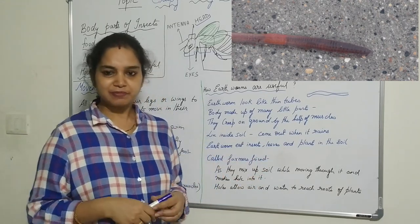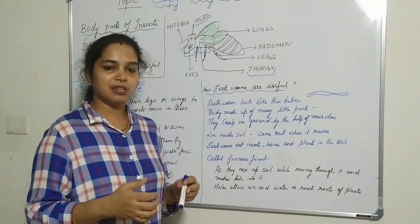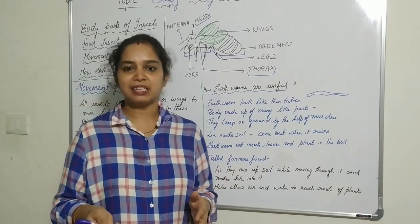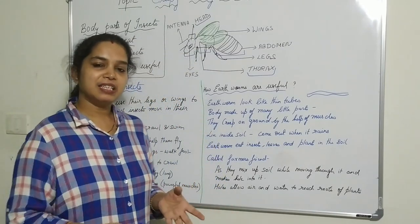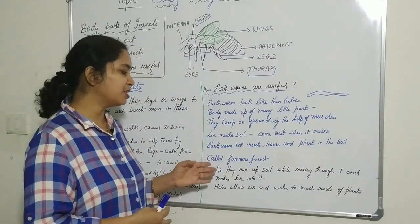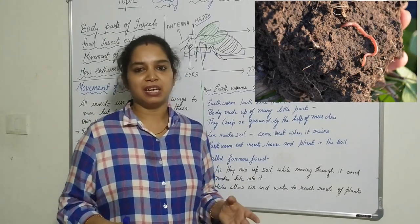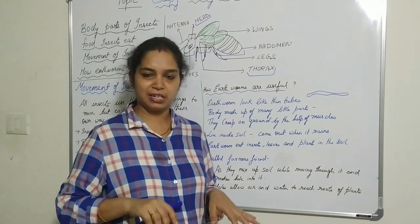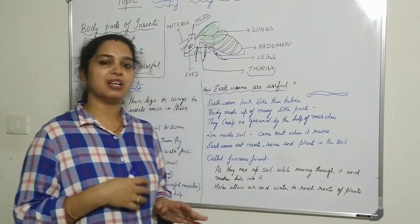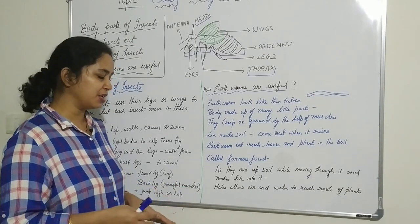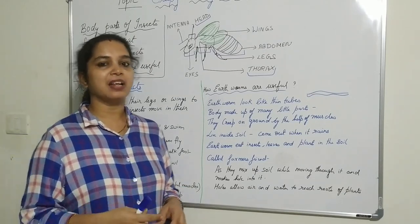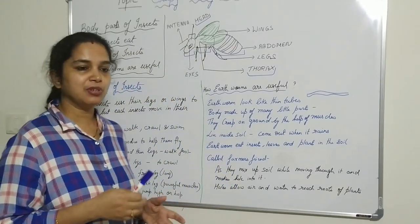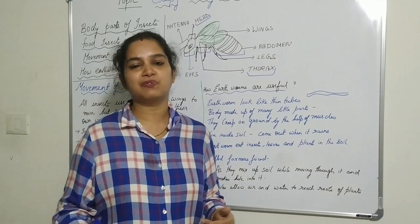Earthworms eat leaves and plants in the soil. They decompose dead and dried leaves and plants, making the soil very fertile. As they move through the soil, they churn and mix it, creating holes that allow air and water to reach the roots of plants. This is why the earthworm is very useful and is called the farmer's friend.